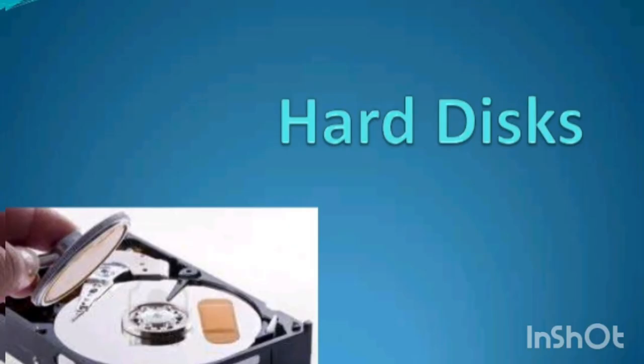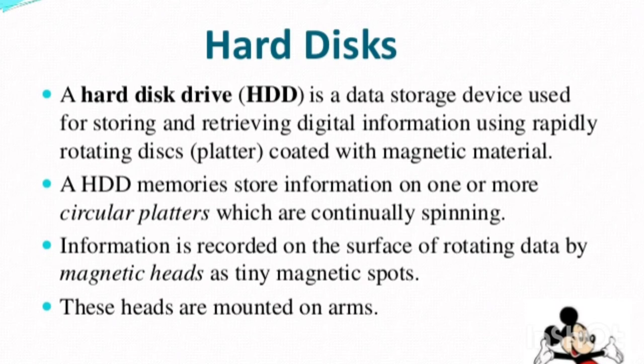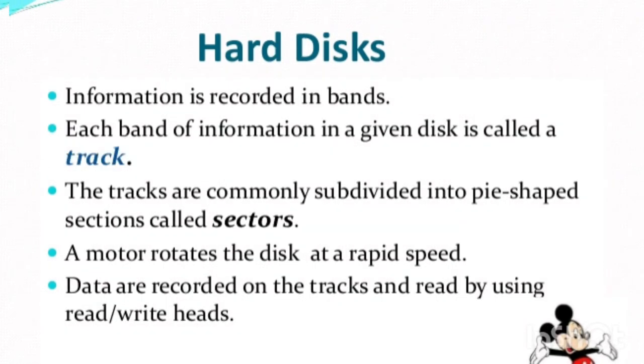Next, the hard disk. The hard disk is one of the types of secondary storage devices. The hard disk drive is a data storage device and is the update of the floppy disk. This hard disk stores and retrieves digital information by rotating its disk. While data is being stored, the disks rotate. These rotating disks are coated or covered with magnetic material. All information is recorded in bands — the bands are the internal parts of the hard disk. This band of information is placed in the disk, and this disk is called the track.